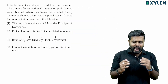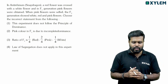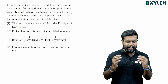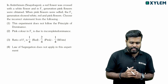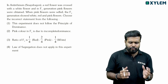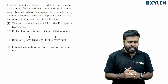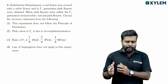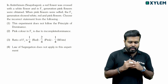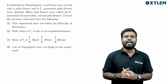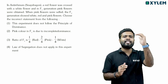Another question: In Antirrhinum, a red flower was crossed with a white flower and in F1 generation, pink flowers were observed. When pink flowers were selfed, the F2 generation showed white, red and pink flowers.